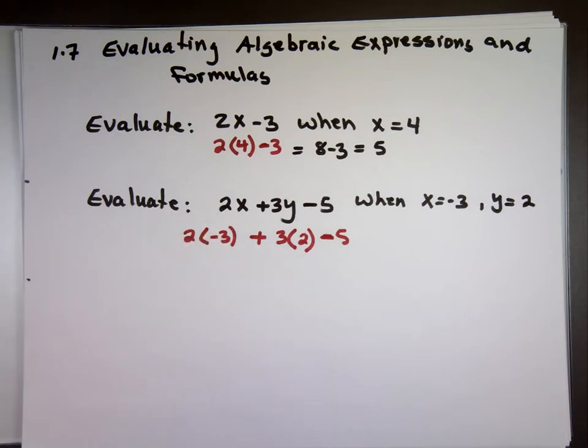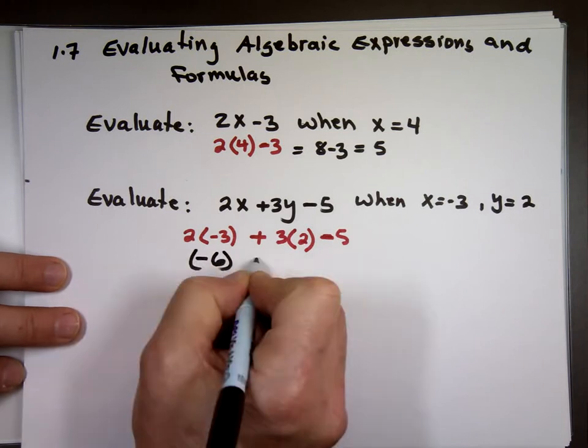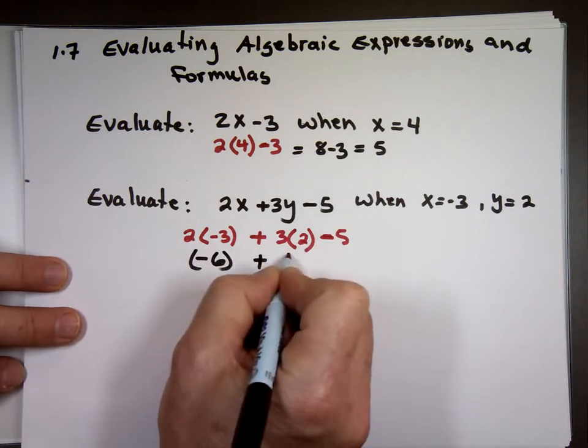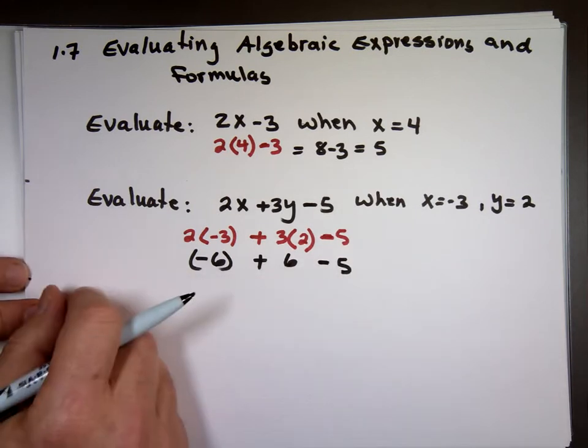2 times the negative 3? Negative 6. Plus 3 times 2? Positive 6 and there's the minus 5. Again, you want to add three numbers.